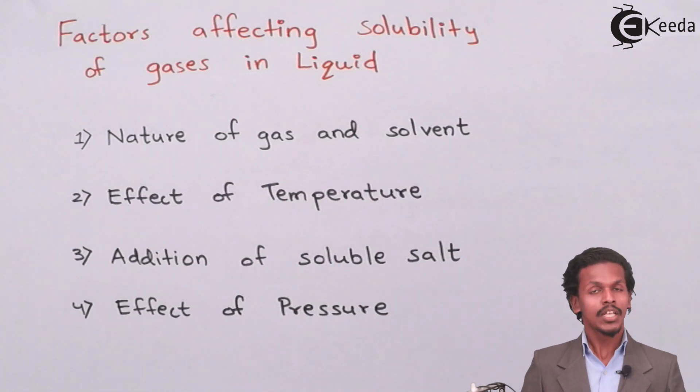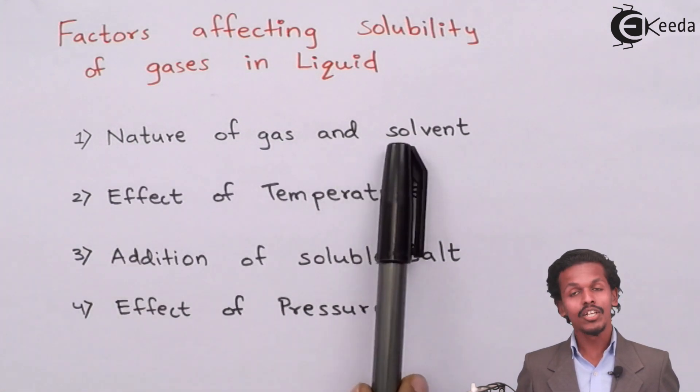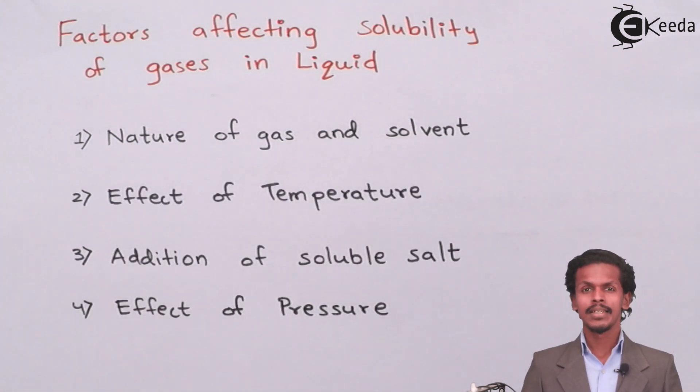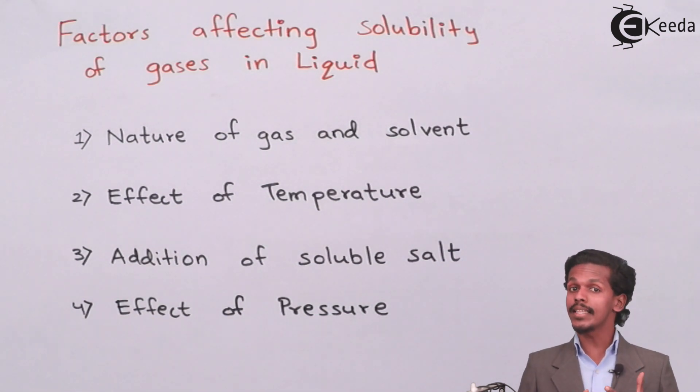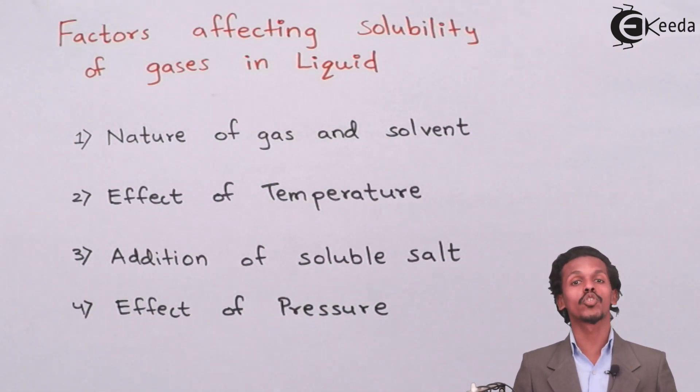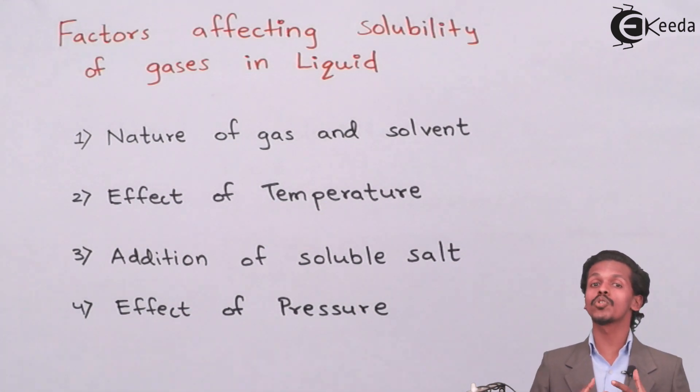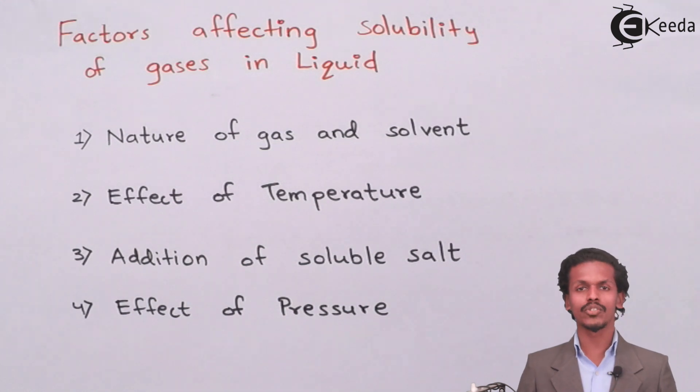Let us talk about the first factor, which is the nature of gas and solvent. As you know, water is very soluble in water, but there are other gases that are much more soluble. For example, carbon dioxide is much more soluble in water. This is because water is a polar solvent and carbon dioxide is also a polar molecule, and hence polar dissolves more in polar.